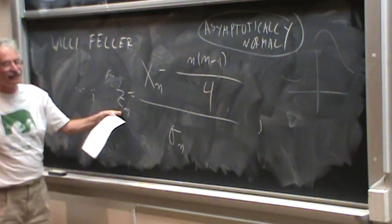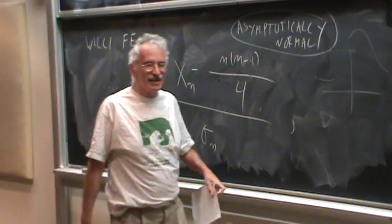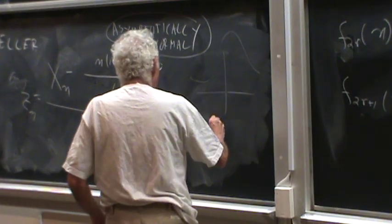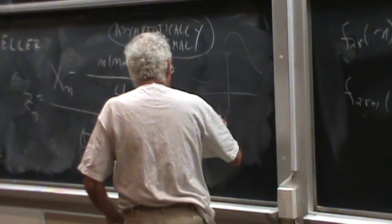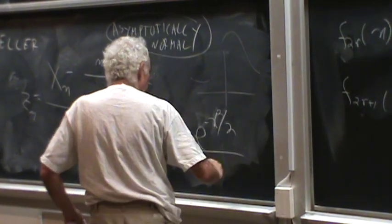and you take the limit in probability, then the probability density functions will be the same as Gaussian, e to the minus x squared over 2 over square root of 2 pi.